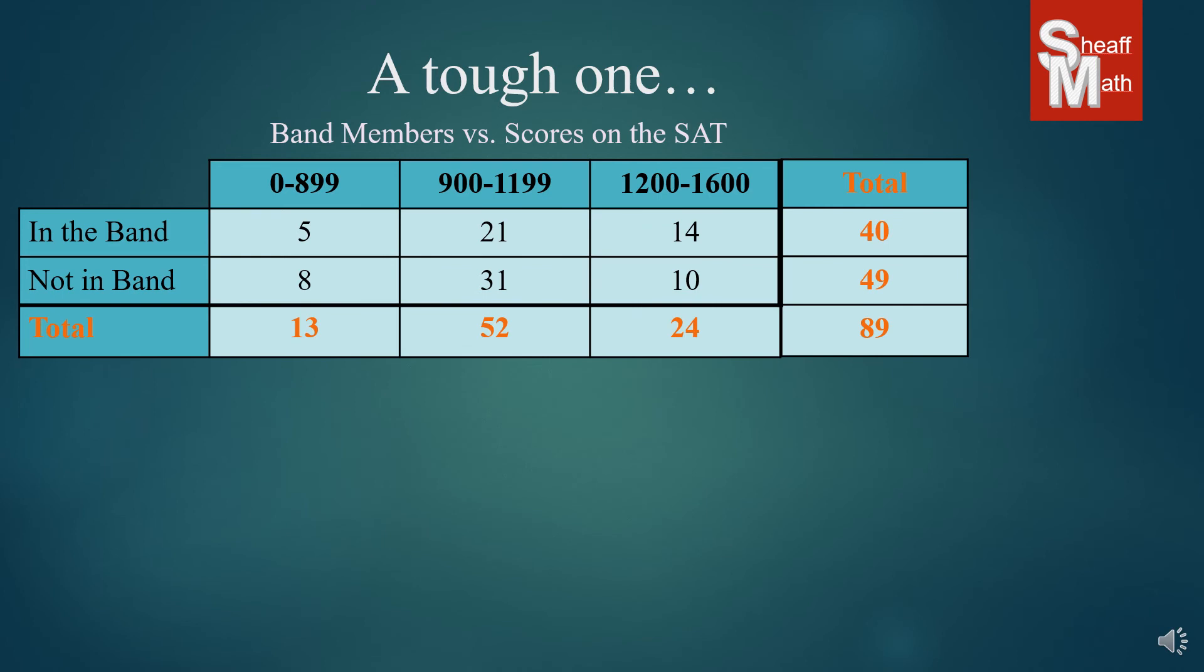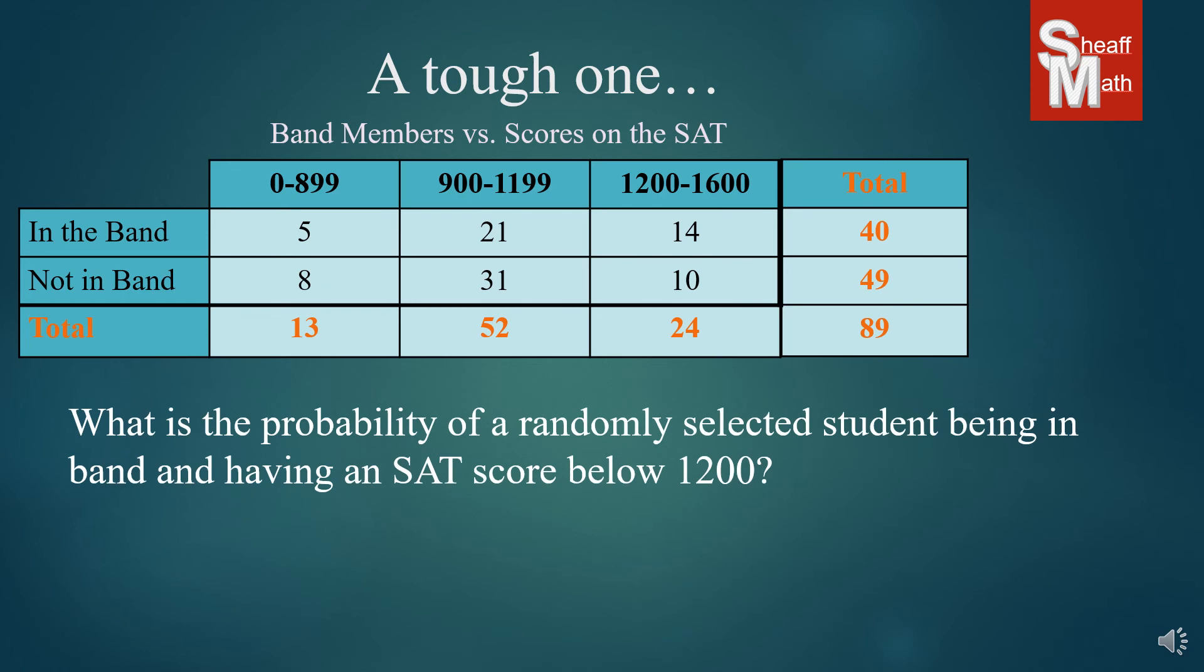And so here's the question, we have to read it very carefully. What is the probability of a randomly selected student being in the band and having an SAT score below 1200? Now being in the band, that's the row. Except the second part, having a score below 1200, there are two columns that contain those. And so what we need to do is we need to combine two different columns, 5 and 21, and see what that probability is out of the total.